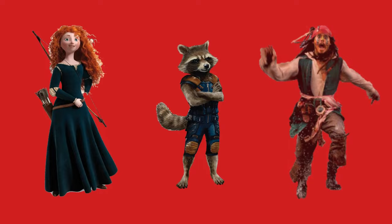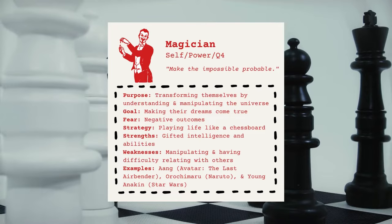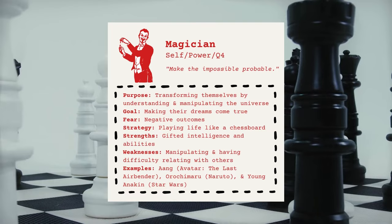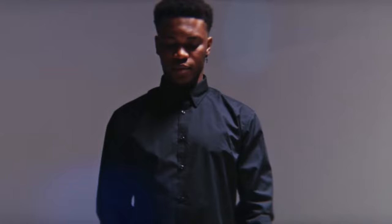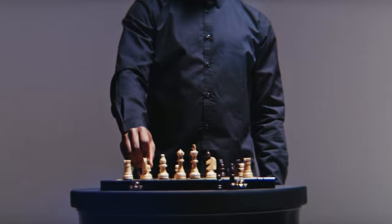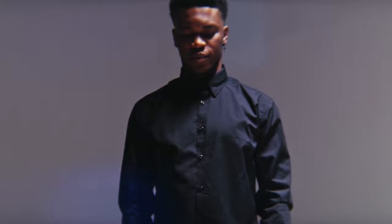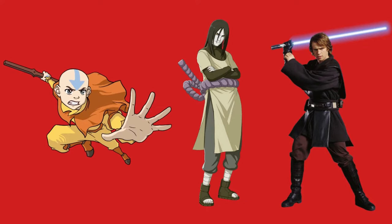The magician is a self-type archetype that believes obtaining power is how one leaves a mark in the history books. Their purpose is to transform themselves by understanding and manipulating the universe. These characters strive to make their dreams come true and fear negative outcomes. To avoid this, they play life like a chessboard, each move strategically chosen. They have gifted intelligence and abilities, but sometimes manipulate others for their own desires and have a tough time relating with their peers. Famous magician characters include Aang, Orochimaru, and young Anakin.